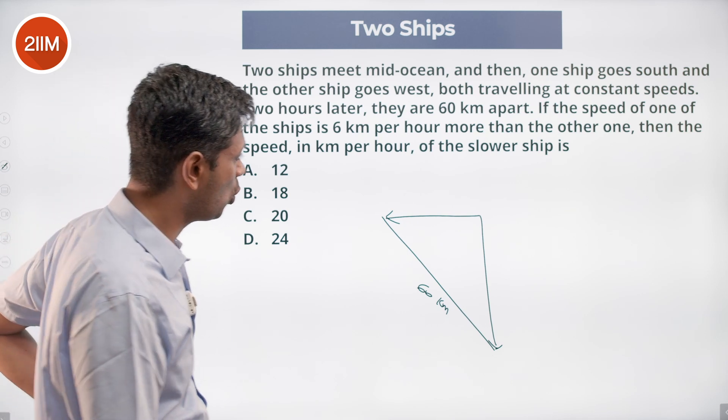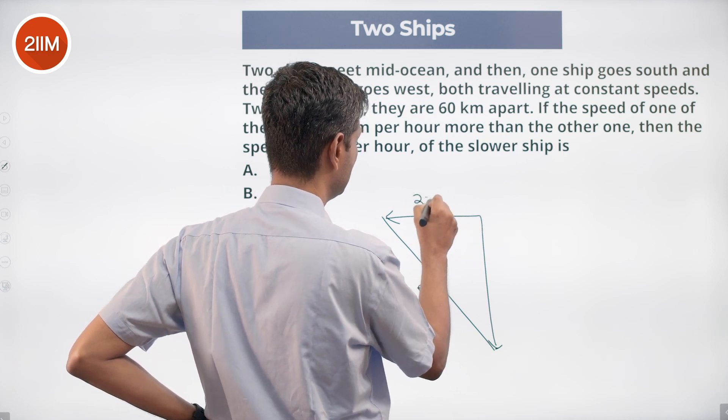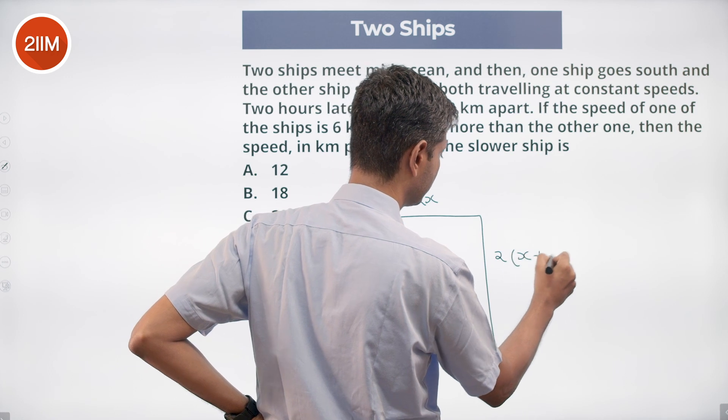The slower ship - let's set it as x. 2x is 2 times x plus 6.